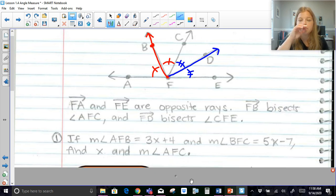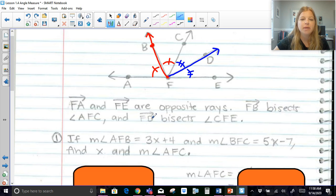Now I have some basically just algebra problems that we're going to take a look at. It says if the measure of angle AFB, so this angle here is equal to 3X plus 4. And the measure of BFC is equal to 5X minus 7. Find X and the measure of AFC. So find X. So let's see.